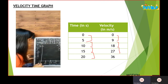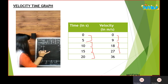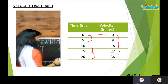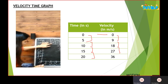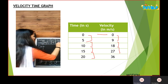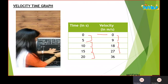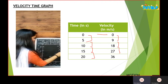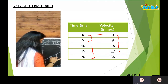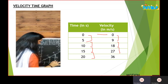Now I'll plot the points: 0 for zero, then 5 on x and 9 on y, 10 on x and 18 on y, 15 on x and 27 on y, 20 on x and 36 on y. I'll join them with a straight line. I'll be finding the slope and the area under the curve for points A, B, C, D, and E.